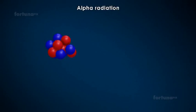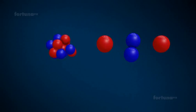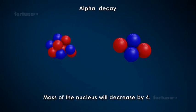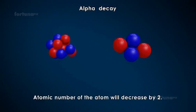In alpha radiation, an alpha particle comprised of two protons and two neutrons will be released. During alpha decay, the mass of the nucleus will decrease by 4 and the atomic number of the atom will decrease by 2.